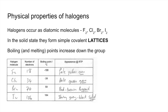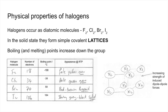To explain the trend in melting points: to break the lattice down we have to overcome the intermolecular forces — the induced dipole-dipole forces between the molecules. As the number of electrons in the molecules increases, these intermolecular forces get stronger. Remember, we're not breaking the covalent bond between atoms in the molecule; it's the induced dipole-dipole forces, or London forces.